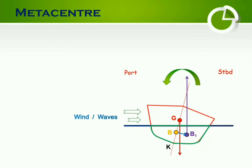The vertical line through the new centre of buoyancy intersects the centre line somewhere at point M, which is called the transverse metacentre. The vertical distance measured between the centre of gravity and the metacentre is called the metacentric height. Metacentric height has got its own importance in ship's stability.